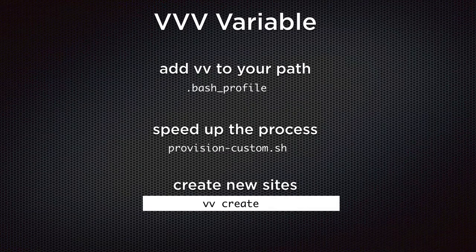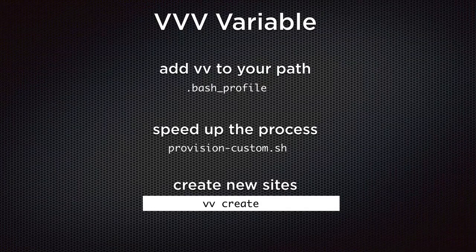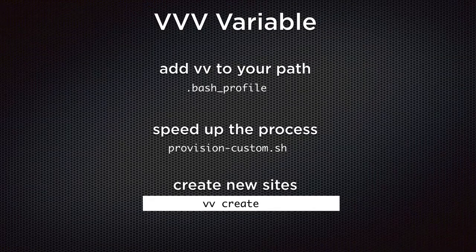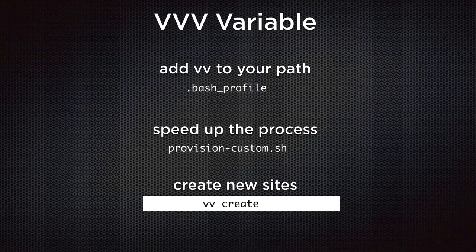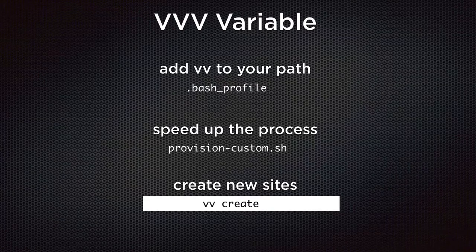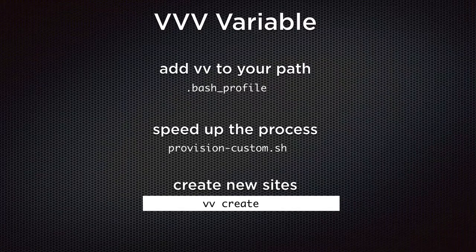The next thing we want to do is create more WordPress websites for our development sites. The tool we use for this is Variable VVV, which we've already installed, and its command is vv. To create new sites, you run vv create, and it brings you through a wizard to install the site. Two things to be aware of before doing this: you need to move the vv command into your path — there's documentation on the website, or just Google 'how to add to your path'. Your path is normally inside your bash profile or .bashrc file.